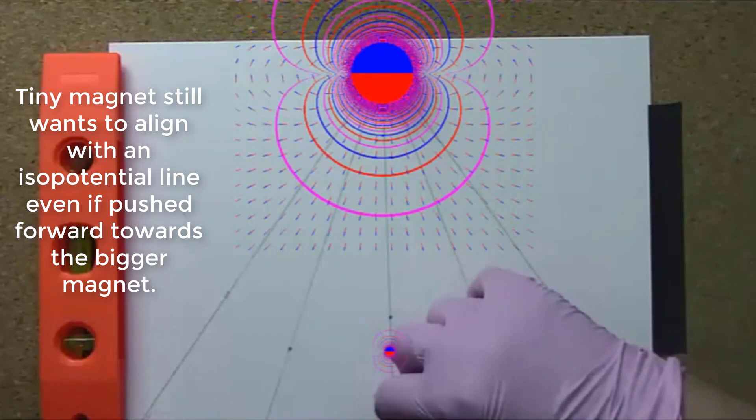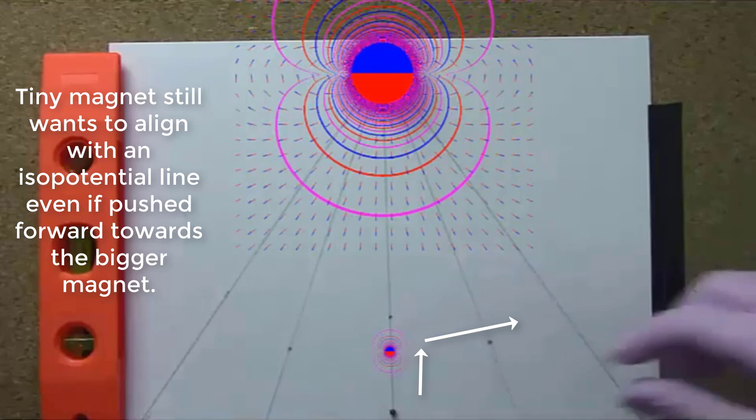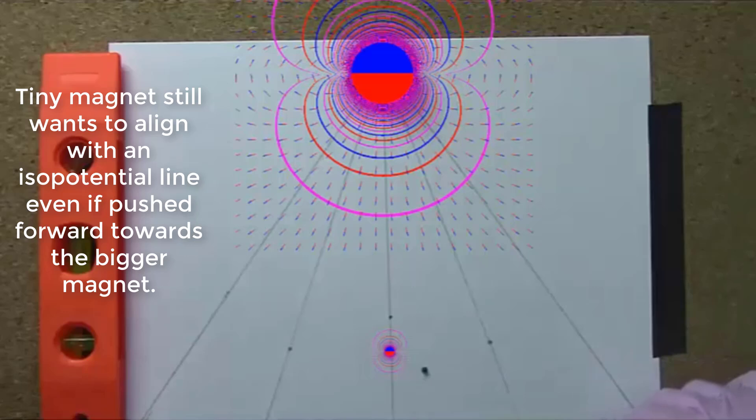Tiny magnet still wants to align with an isopotential line even if pushed forward towards the bigger magnet.